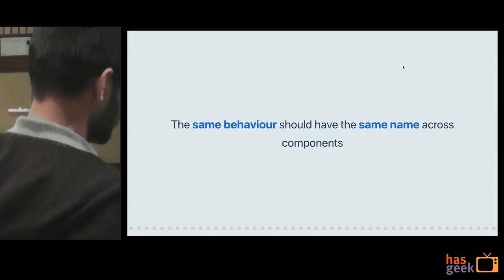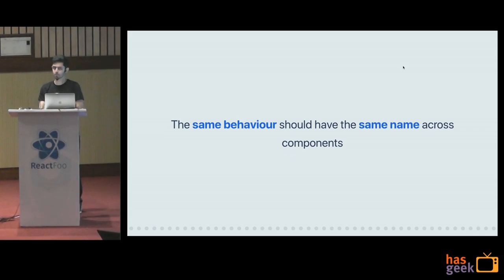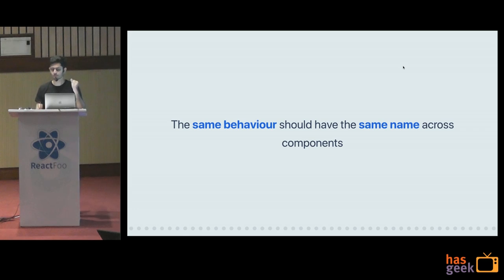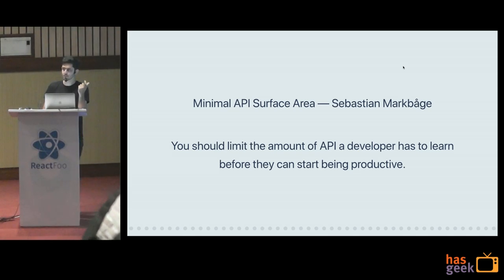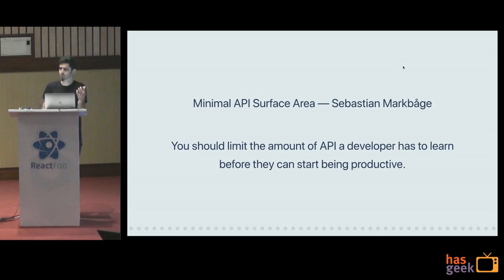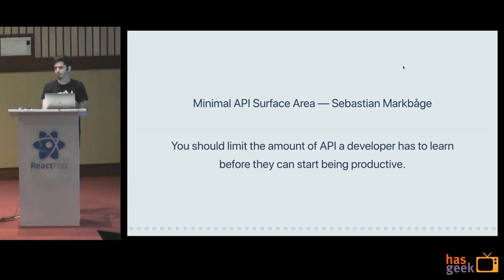Another way of saying this: the same behavior should have the same name across components. A good component does not only care about its own props, but also cares about the consistency of props across the codebase. I first came across this concept in a talk by Sebastian Markboga called 'Minimal API Surface Area' — you should search it on YouTube, it's a great talk. His core idea was that you should limit the amount of API a developer has to learn before they can be productive with your codebase or library. Similarly, if you onboard a new developer, you want to minimize the time before they can start being productive. This talk is from 2013, but six years later everything is still super valid.